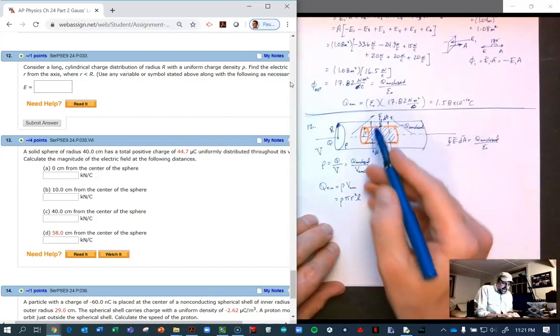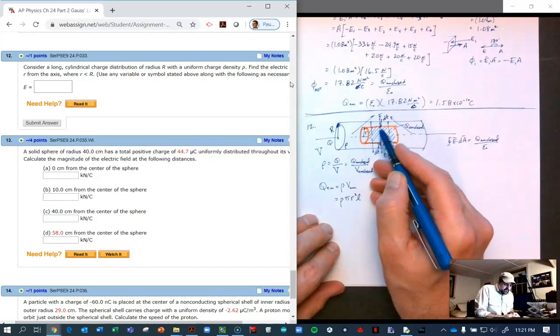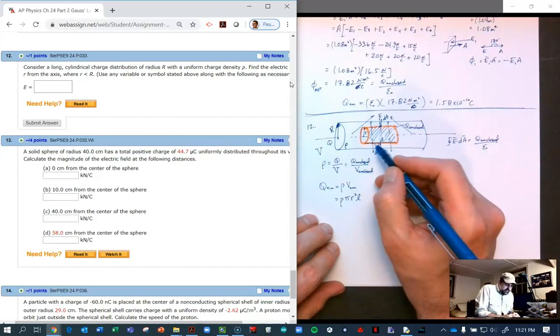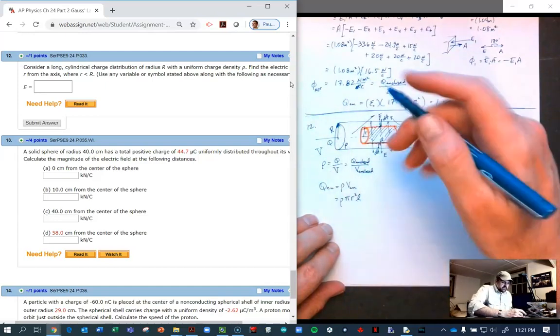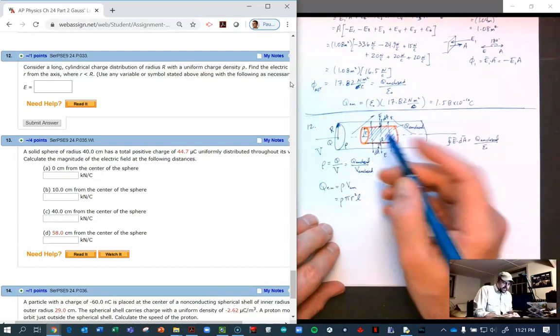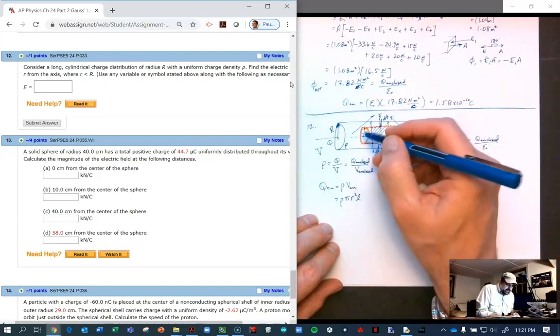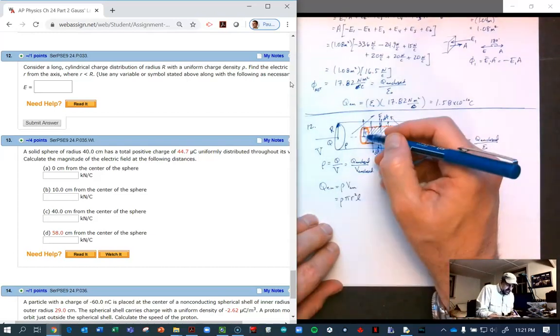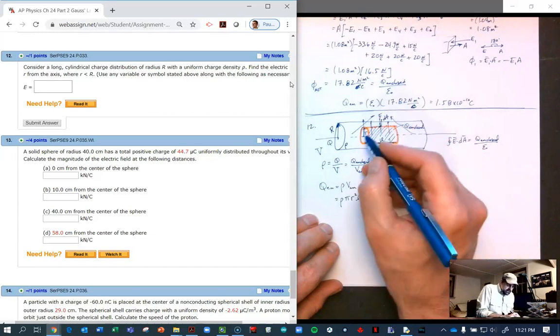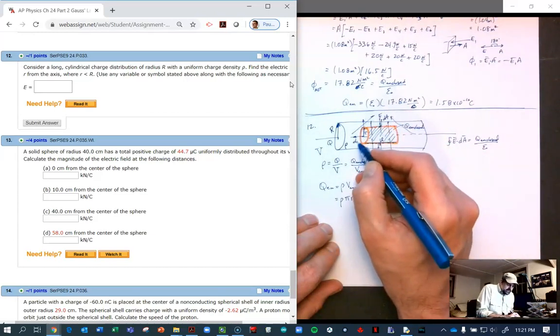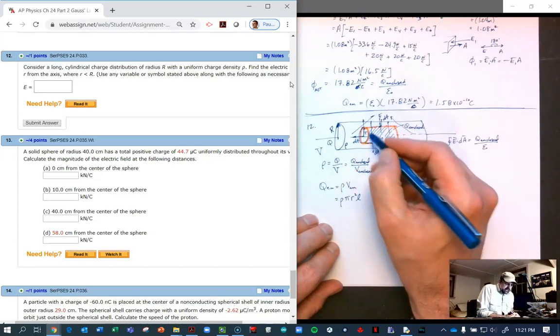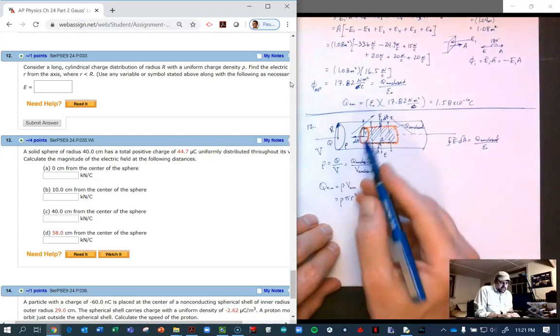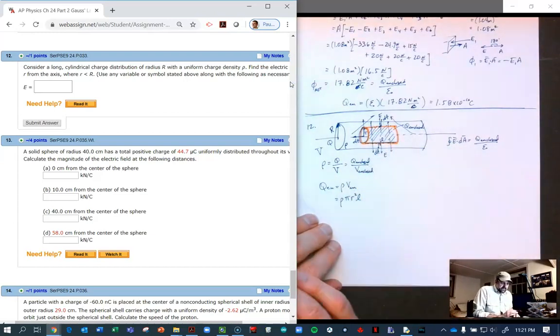The electric field going along the side is perpendicular to the differential area of the sides of the cylinder. There is no flux to the sides, the only flux is through the middle portion here.